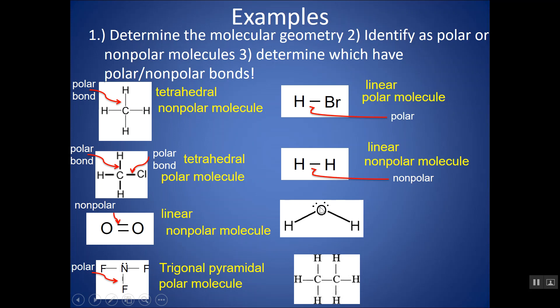Here is water. O has one, two, three, four domains around it and two lone pairs, so this would be bent. If it's bent, it will always be a polar molecule — anytime something's bent, it must be polar. And the O-H bond is a polar bond, same with this O-H bond.